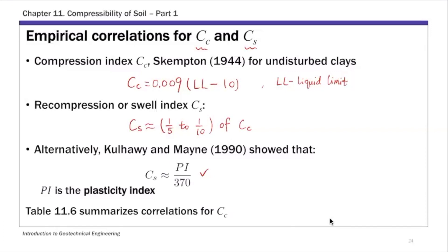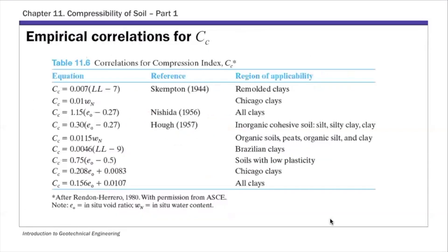That's just one empirical correlation. If you look at table 11.6 in your textbook, there are other correlations for estimating CC as well. But this Skempton one is one of the most commonly used. The one listing here is for undisturbed clays. And this is table 11.6 that summarizes other correlations for this CC index. There are different options for CC.